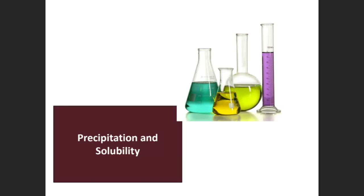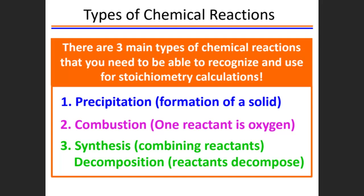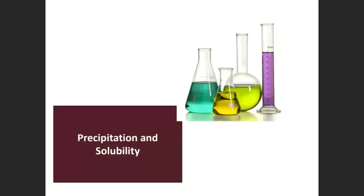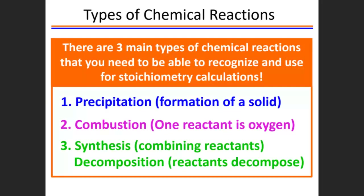Now we move to precipitation and solubility. What is precipitation? Not all solutes are soluble in a specific solvent. When a solute cannot be dissolved, it may settle at the bottom of the solution — that is precipitation. We will also learn different types of chemical reactions. The three types are precipitation, combustion, and synthesis. Note that terminology may vary between textbooks and colleges, so follow your course syllabus.